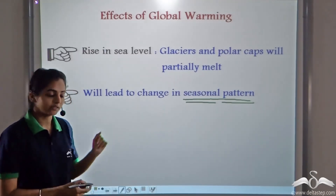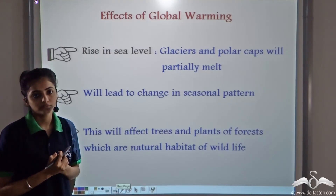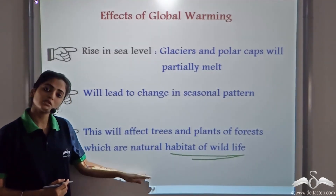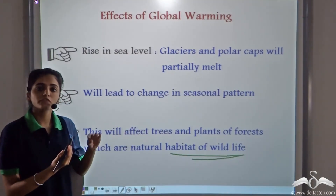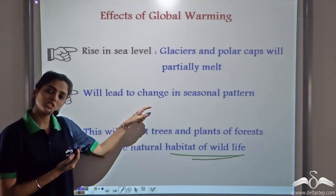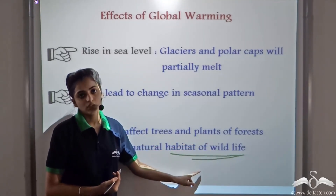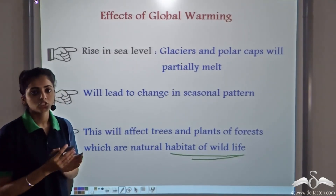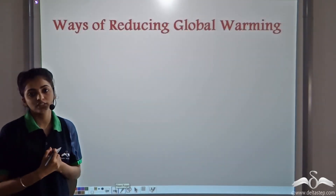This change in seasonal pattern is affecting the natural habitat of wildlife. The natural habitat of wildlife depends on seasonal patterns, and as the seasonal pattern is changing due to the unexpected increase in temperature, that has led to a change in the habitat of wildlife. So global warming is posing a threat to the existence of life on earth, and there is an urgent need to find ways of reducing it.